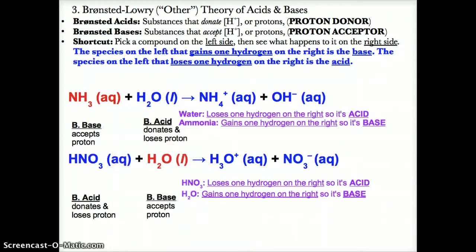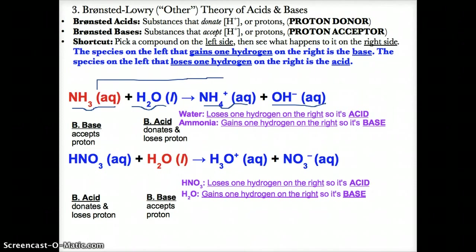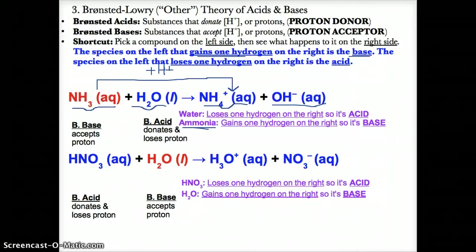Looking at this reaction: NH3 (aq) + H2O (l) → NH4+ (aq) + OH- (aq). We must determine which species on the left is the Bronsted acid and which is the Bronsted base. NH3 on the left becomes NH4+ on the right. Going from NH3 to NH4+, this species gains one hydrogen ion, which means ammonia is the Bronsted base since it accepts the proton to go from NH3 to NH4+.